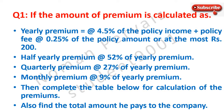Question number one: if the amount of premium is calculated as — first, yearly premium is equal to at the rate of 4.5% of the policy income plus policy fee at the rate of 0.25% of the policy amount or at the most rupees 200. Second, half yearly premium at the rate of 52% of yearly premium. Third, quarterly premium at the rate of 27% of yearly premium. Fourth, monthly premium at the rate of 9% of yearly premium. Fifth, complete the table below for calculation of the premiums, and also find the total amount he pays to the company.